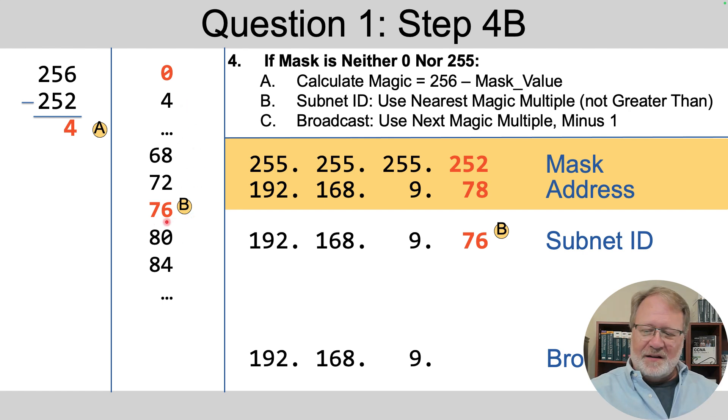And we've highlighted 76 because we want the multiple of four closest to the address without going over. So that's what the step B text is supposed to mean. So 76 is the closest multiple to 78 without going over 78. So 76 is the value of the subnet ID in that case. So that part's done.